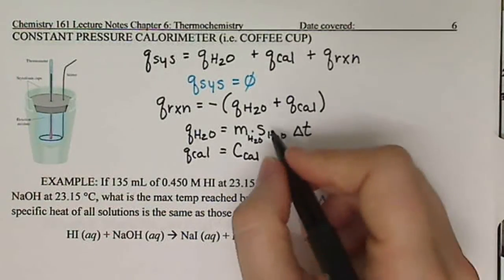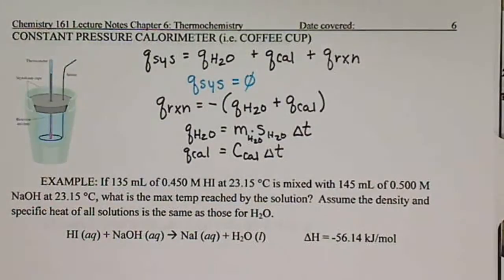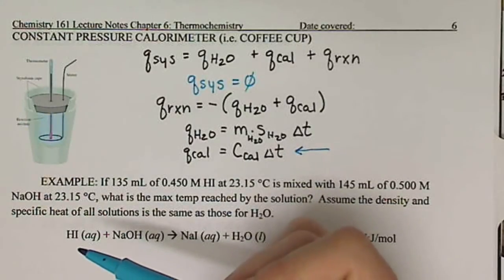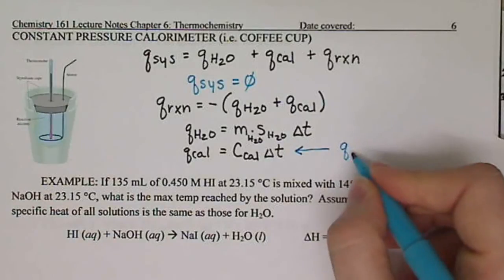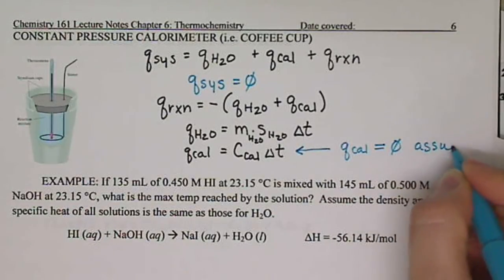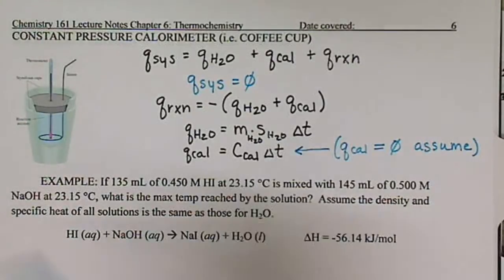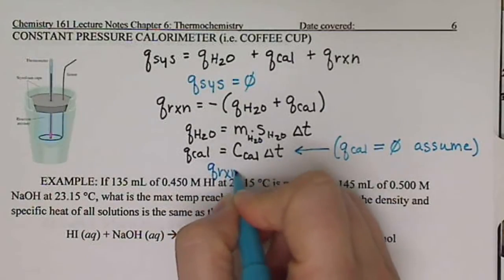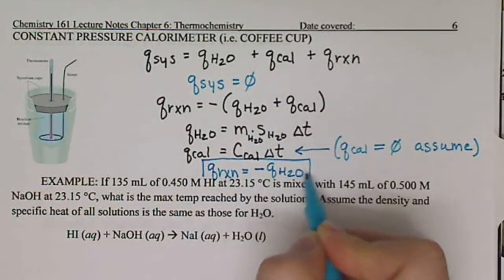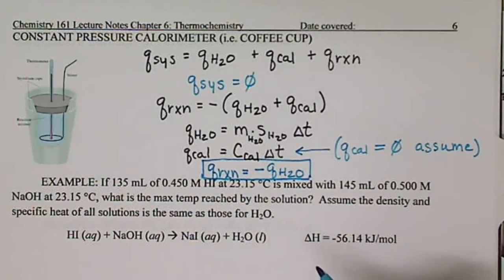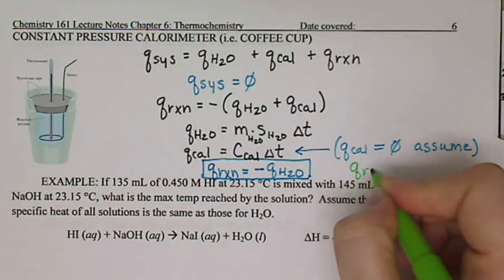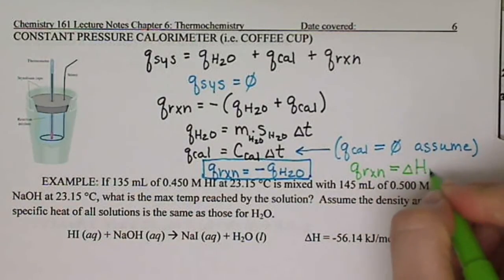We're going to make an assumption when working with the coffee cup calorimeter — the two styrofoam containers — we're going to assume that they don't absorb any heat, so Q_cal equals zero. What that means then is Q of our reaction is equal to the negative Q of the water. And because we are at constant pressure, Q of our reaction is in fact equal to delta H of the reaction.